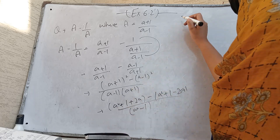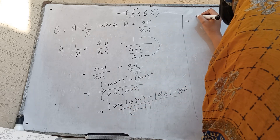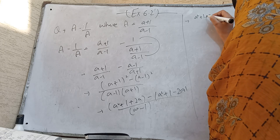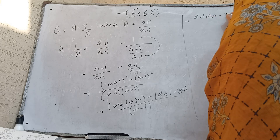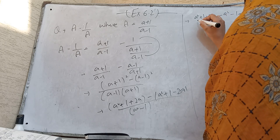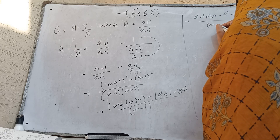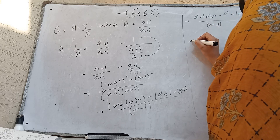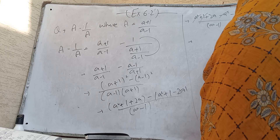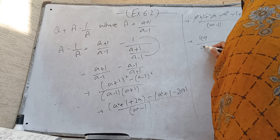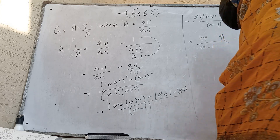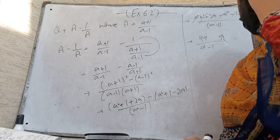Next we open the bracket: a squared plus 1 plus 2a minus a squared minus 1 plus 2a, all divided by a squared minus 1. So we have 4a over a squared minus 1, which is the required answer of this question.